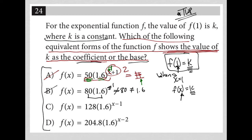Choice C: if I put a 1 in for x, the exponent becomes 0, and 1.6 to the 0 is just 1, so I get 128. That's nice because 128 is already listed in the function. So 128 equals k, and that value for k is shown as a coefficient — 128 is the coefficient. So C is most likely the correct answer.